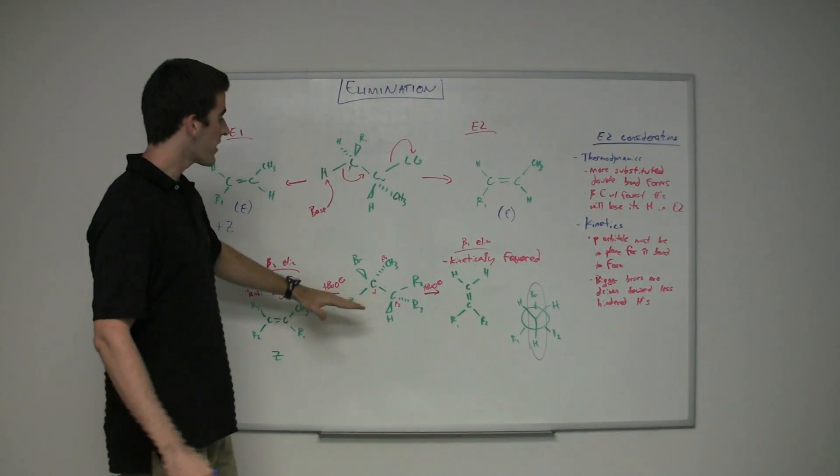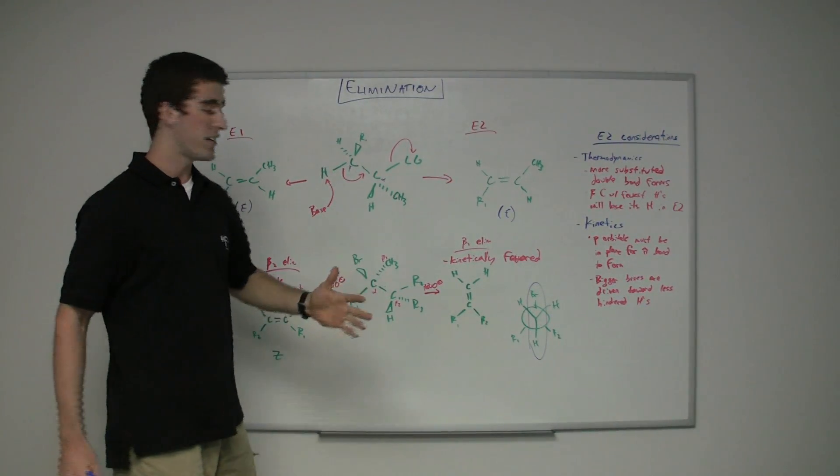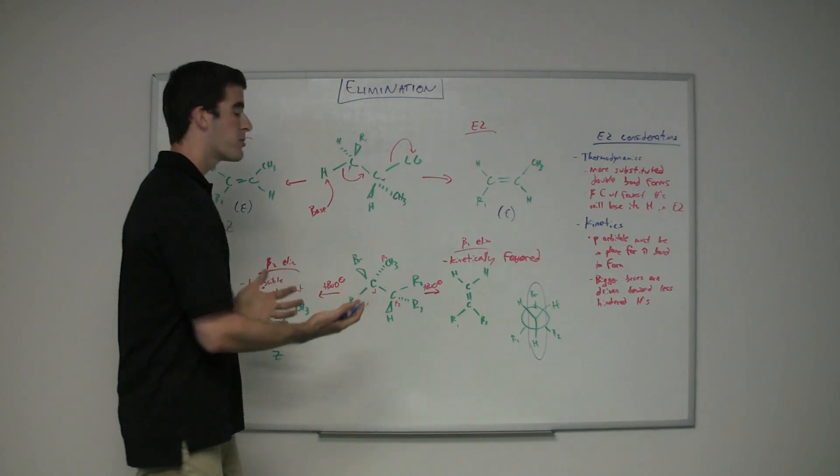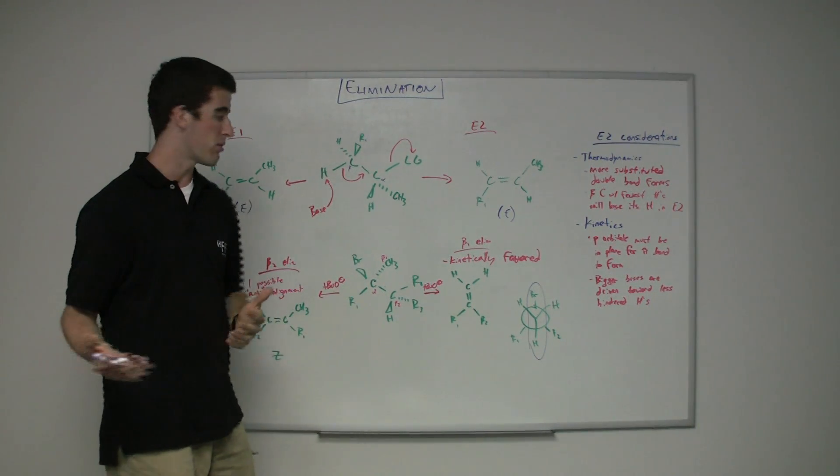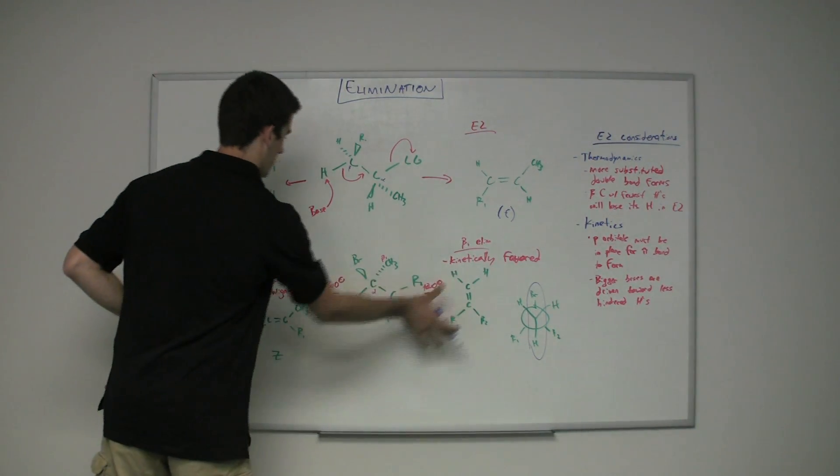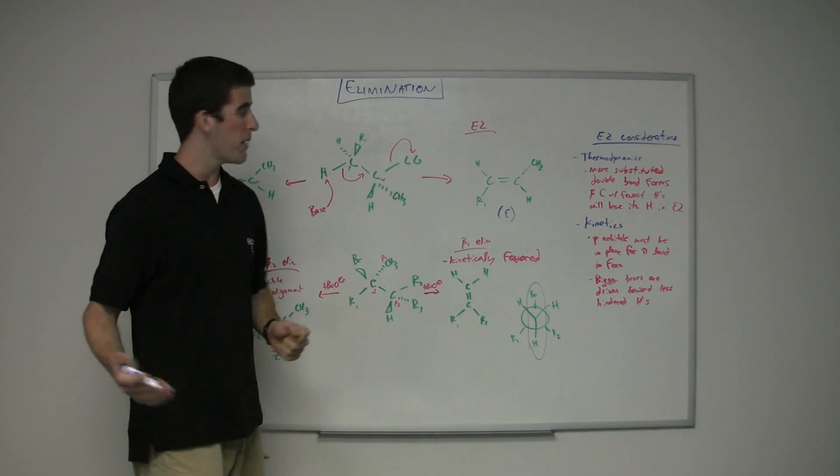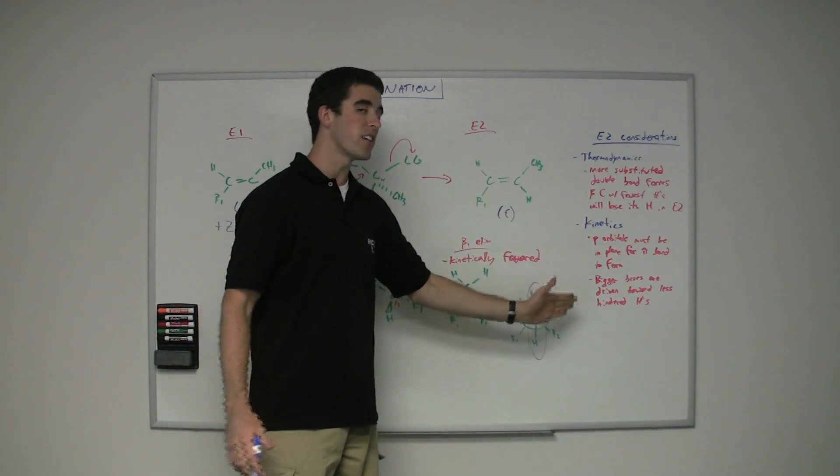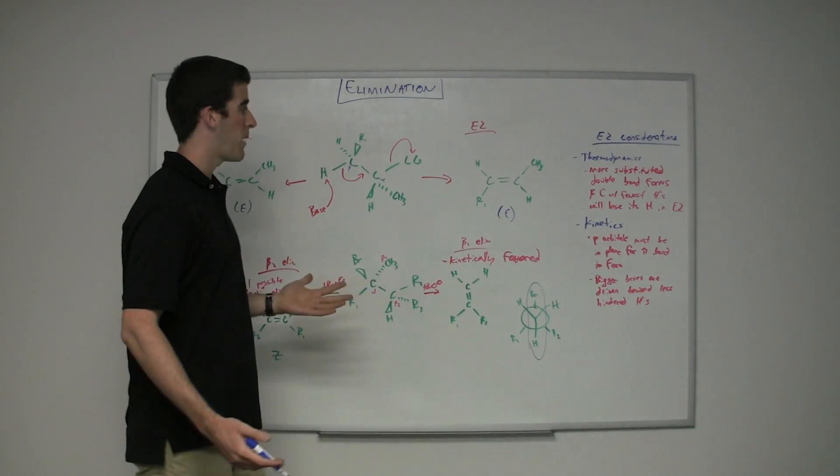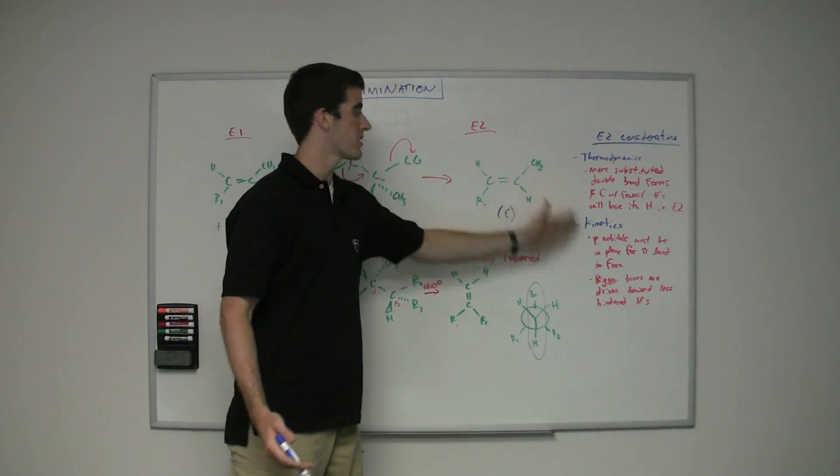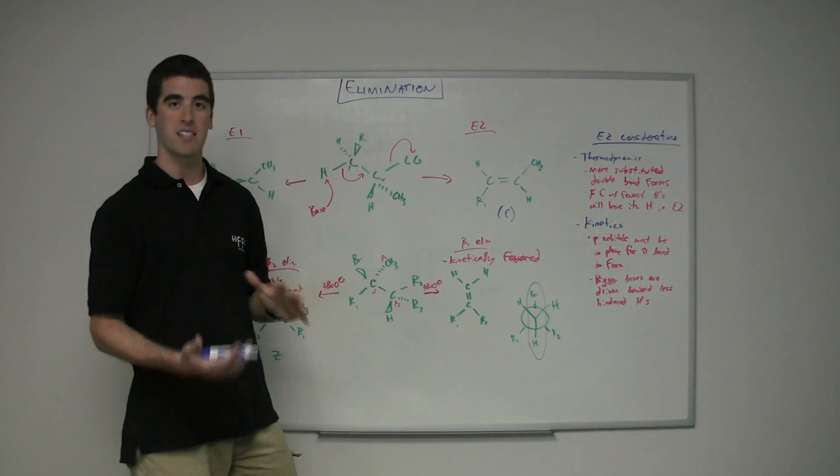So we have two beta carbons with beta Hs that we need to take into account. There's a difference between these beta carbons, so there's going to be difference in products here. You'll notice that there are two different products based on the two different elimination schemes that are happening. And you can use these considerations to take into account what's going to be happening with those schemes. Thermodynamics, kinetics, you're talking about anti-alignment,